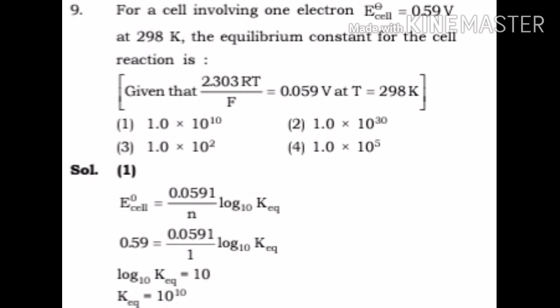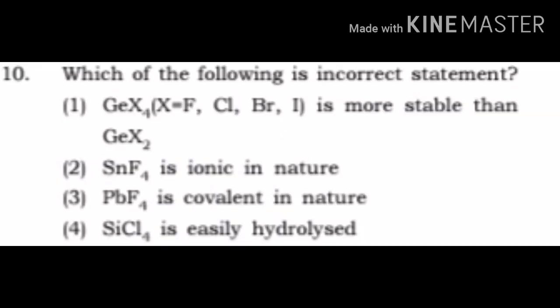The formula is E naught cell equals 0.0591 divided by n log K equilibrium. So 0.59 equals 0.0591 by 1 times log K equilibrium. Log K equilibrium equals 10, then K equilibrium equals 10 to power 10. The answer is option 1.